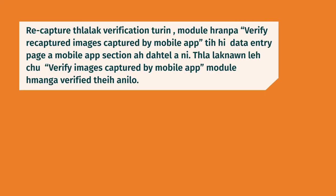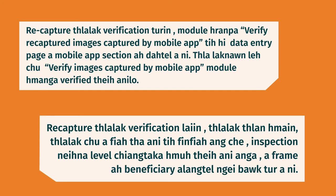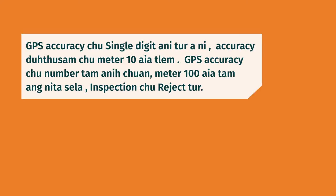For recapture verification, use the module 'Verify Recaptured Images Captured by Mobile App' found in the data entry page mobile app section. This module is used to verify the recaptured images. After recapture and verification, the process is complete. The inspection level must be correctly identified. The beneficiary must not be deleted from the system. GPS accuracy must be a single digit value.